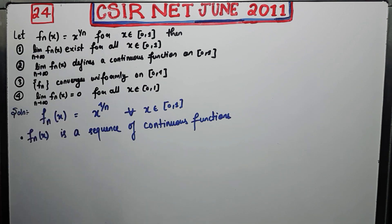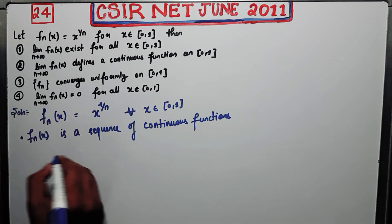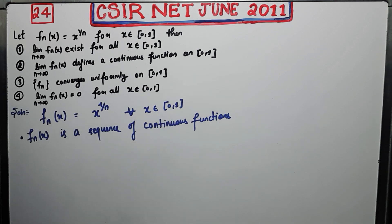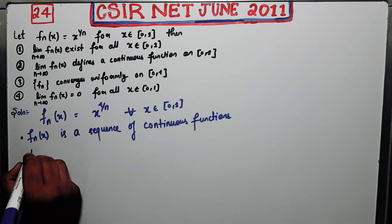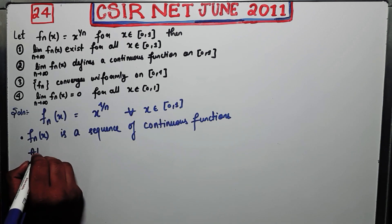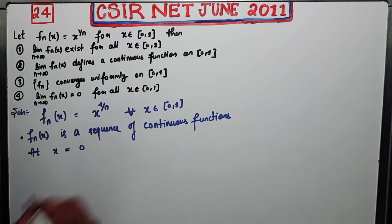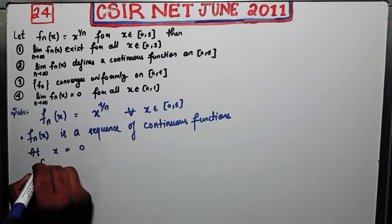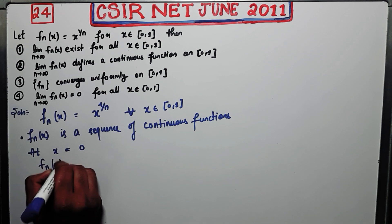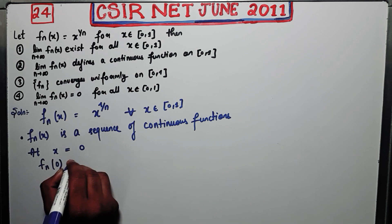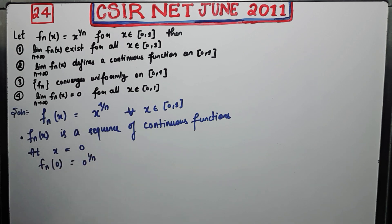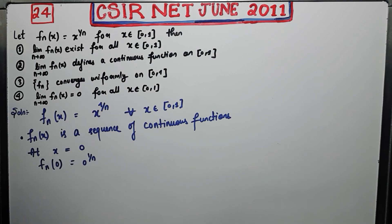You need to first calculate the pointwise limit. You have the domain [0,1]. At x=0, fn(0) = 0 to the power 1/n. Now, 0 to the power 1/n for every fixed n belonging to the natural numbers gives 0 as the answer.